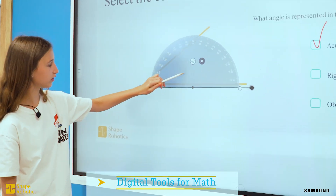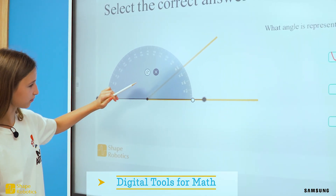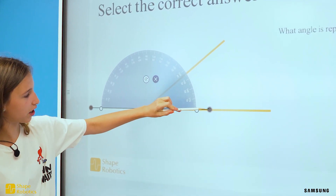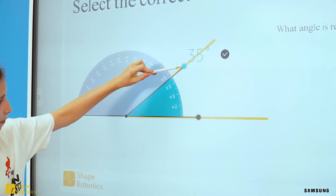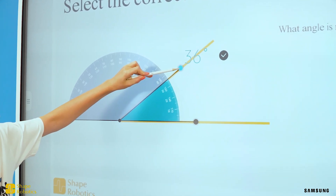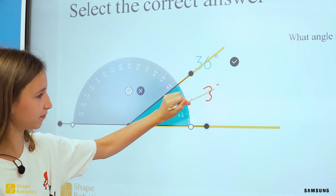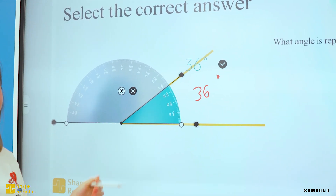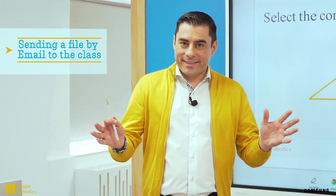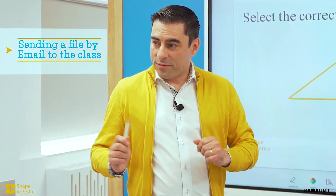And place it right here. Let's measure the angle. It's 36 degrees, so it's definitely an acute angle. We'll save our work and send it via email to each of you.